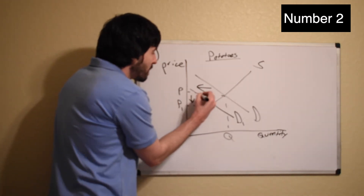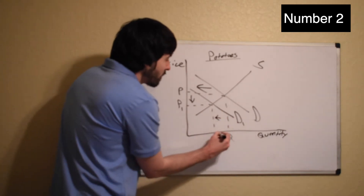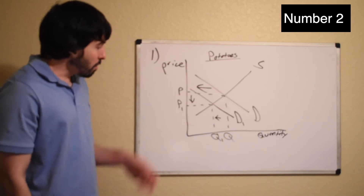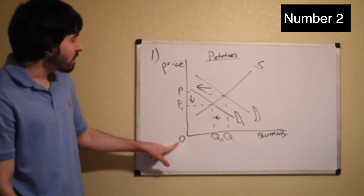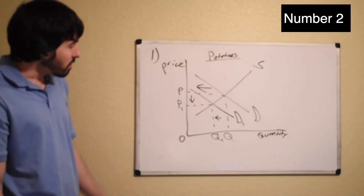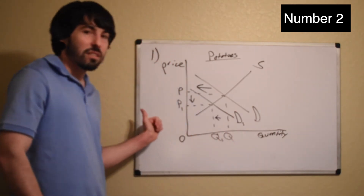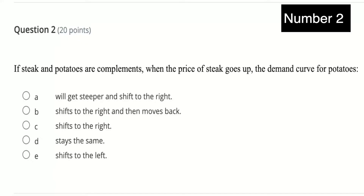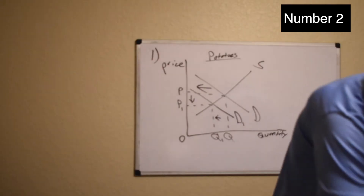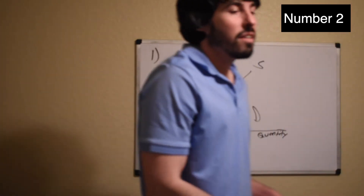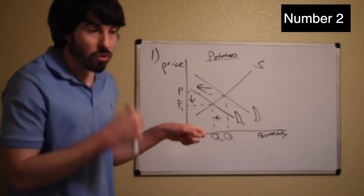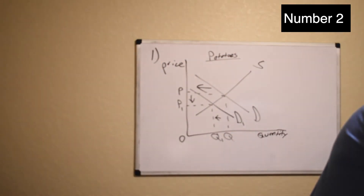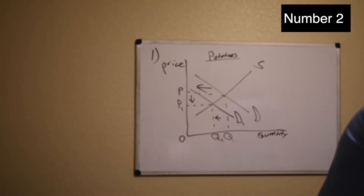So the demand for potatoes is going to shift to the left. What happens here is a decrease in the price of potatoes and a decrease in the quantity of potatoes being bought and sold. Remember, price increases as you go up, decreases as you go down, quantity increases going right, and decreases going left. The demand curve for potatoes shifts to the left — that's answer E on my version, but since your answers are scrambled it might be a different letter, so find the corresponding answer showing a leftward shift.